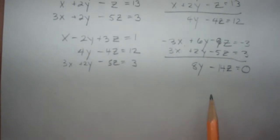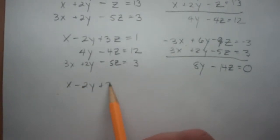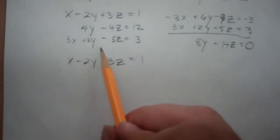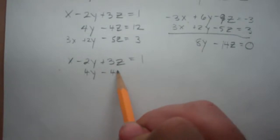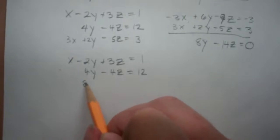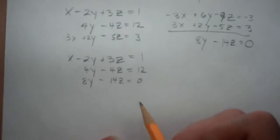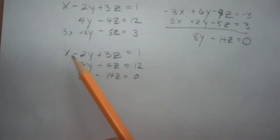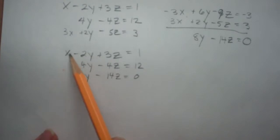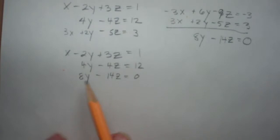Let's write this down. We can bring it all back together: x minus 2y plus 3z is equal to 1 — that didn't change. The second equation didn't change: 4y minus 4z is equal to 12. And our new bottom equation is 8y minus 14z is equal to 0. What should we get rid of next? We want triangular form, which means x, y, and z in the top; y and z in the middle; and just z in the bottom. So let's get rid of this 8y next.